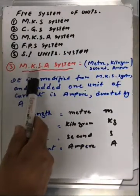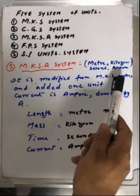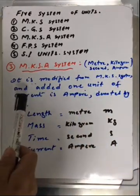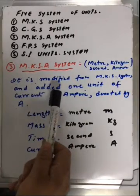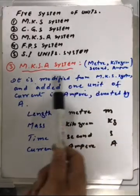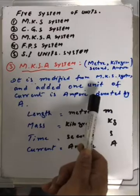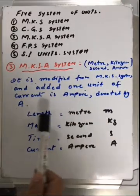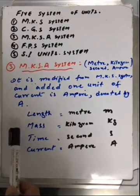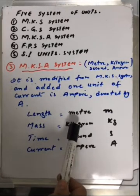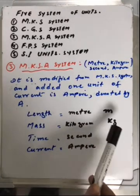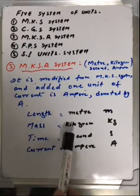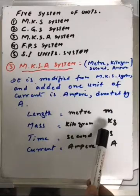Number three, MKSA system: meter, kilogram, second, ampere. It is modified from the MKS system with the addition of one unit of current, ampere, denoted by A. Length is meter (m), mass is kilogram (kg), time is second (s), and current is ampere (A).